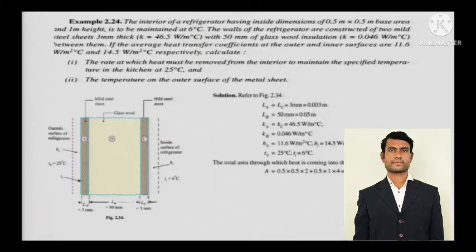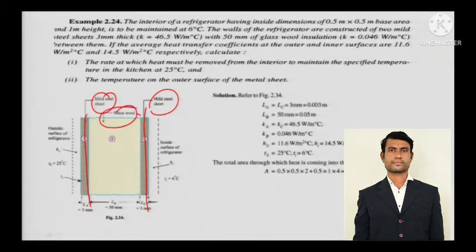These types of numericals are very important. I have already done about 10 to 12 numericals from my first video. This is a mild steel sheet, this is a mild steel sheet here, and this is a mild steel sheet once again. To reduce the heat transfer they have introduced glass wool.